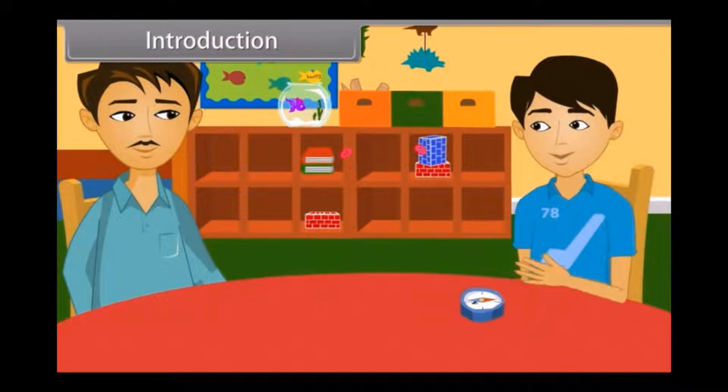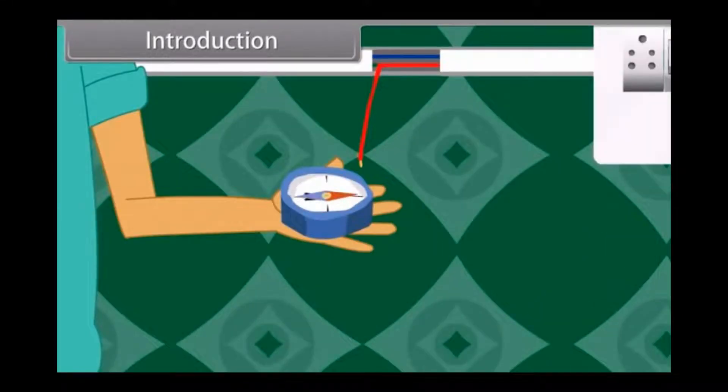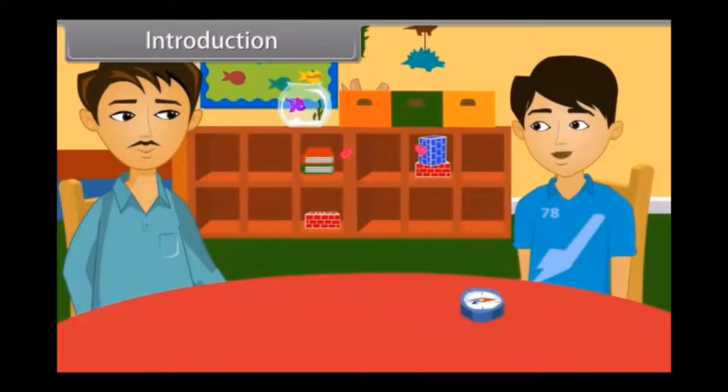I took the compass to my friend's place. They have some electric work being done in their house. We were playing with the compass very close to an open wire. Suddenly, for no reason, the compass needle got deflected. When we moved away from the wire, it came back to where it was. Why did that happen?